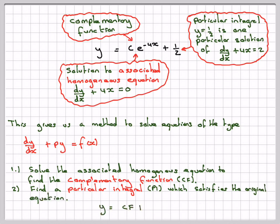Therefore, a solution of this type will be made up of two parts: y is equal to CF plus PI, where CF is a complementary function, and PI is a particular integral. We'll look at how to use this method in the next video. Thank you.